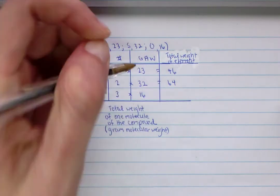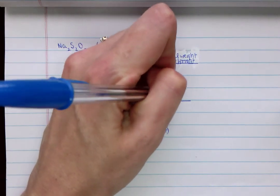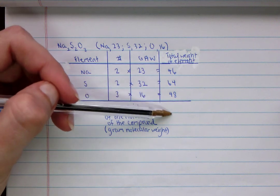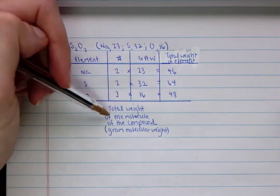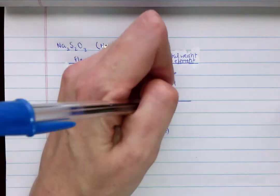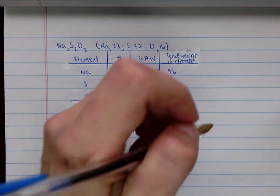And then finally for oxygen, we have three of those, its gram atomic weight is 16, multiply those, and you get 48. And then remember, we add down to get the total weight of one molecule of the compound, or the gram molecular weight. And so when we add down, we get 158, 158 grams.